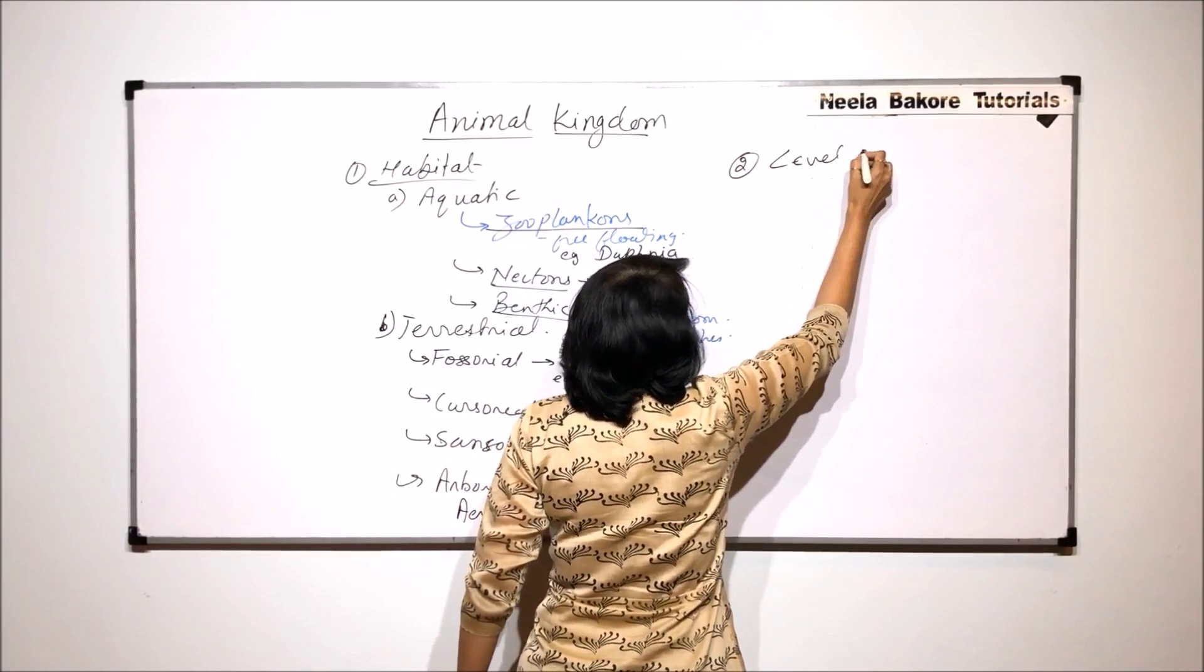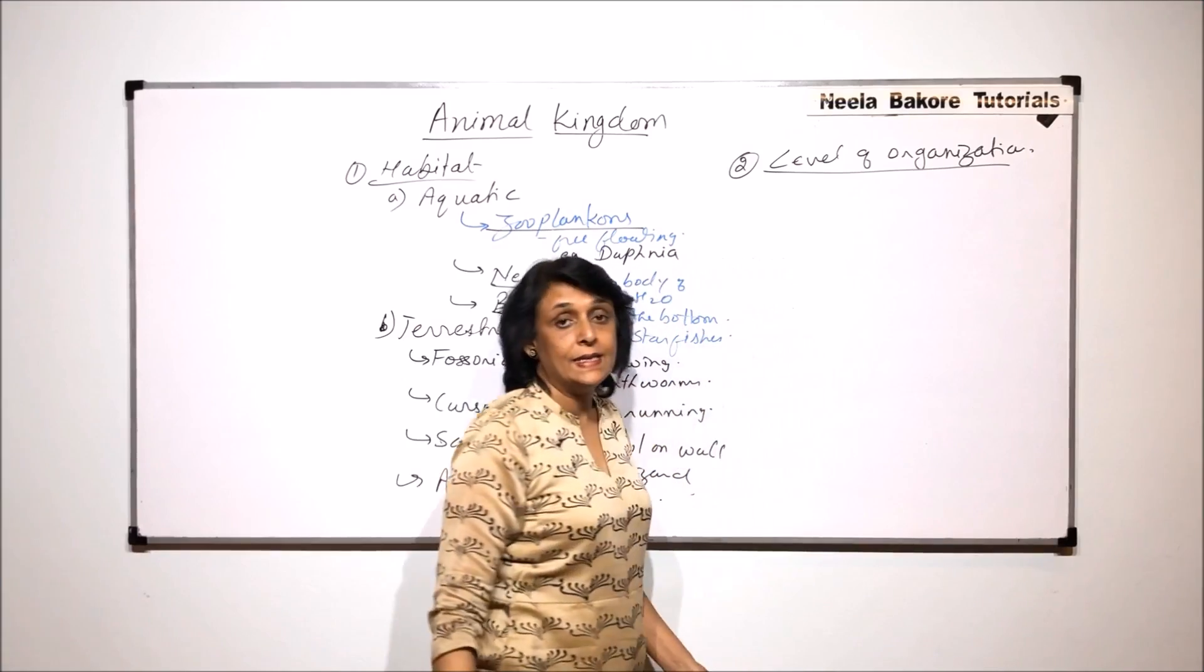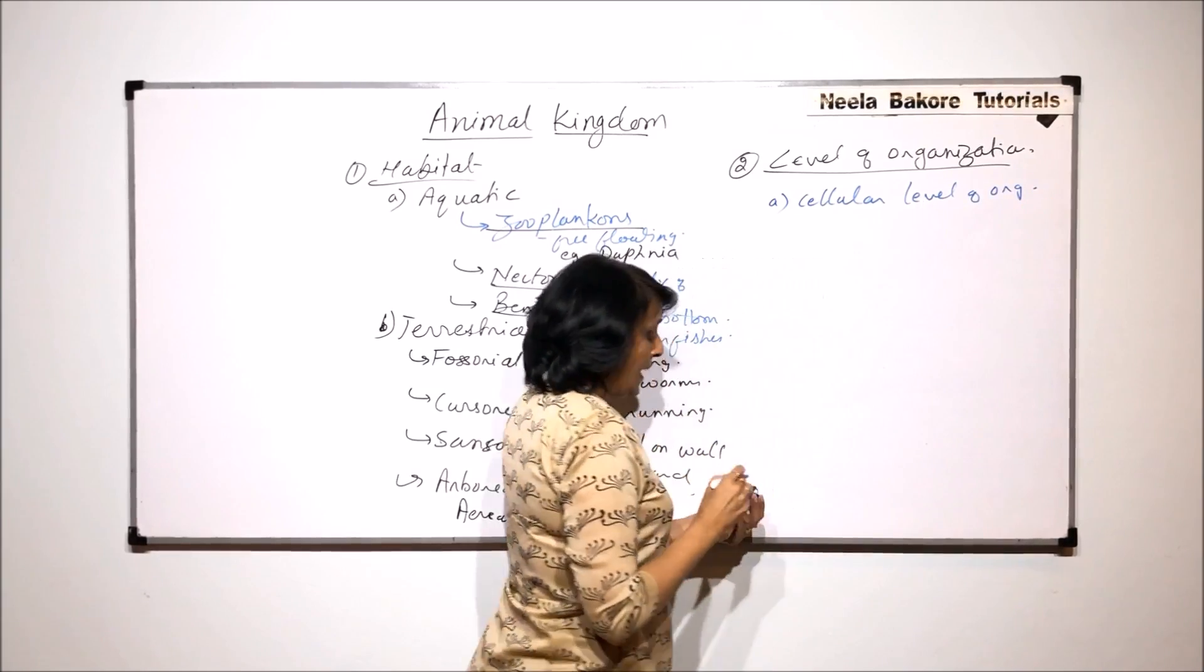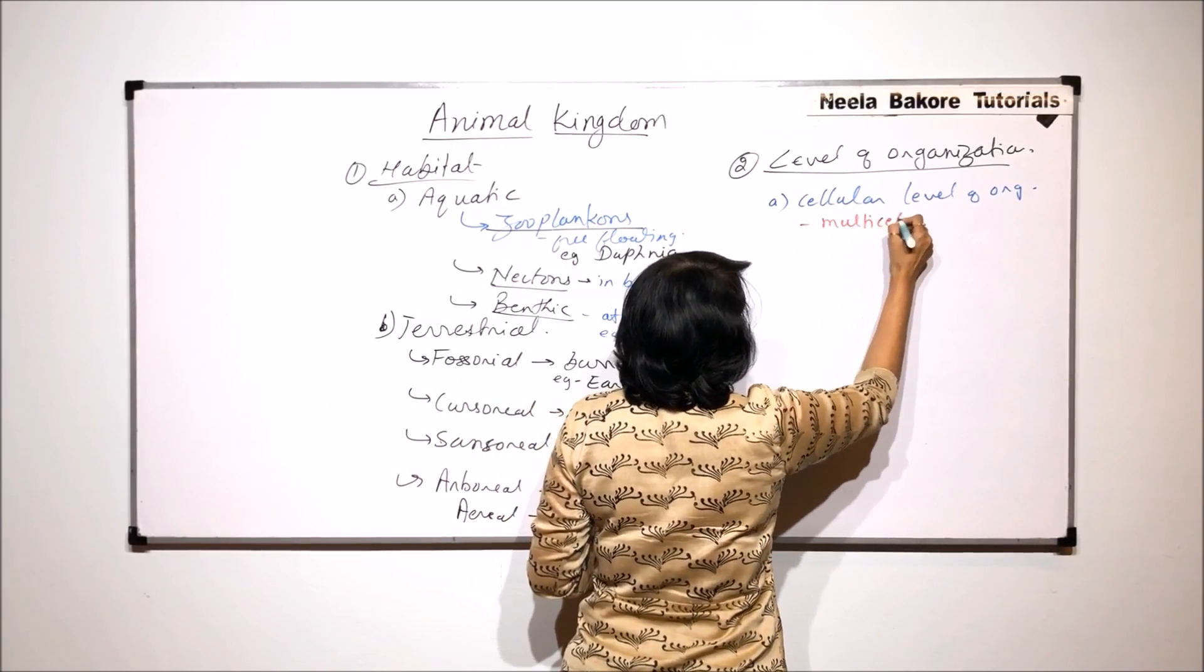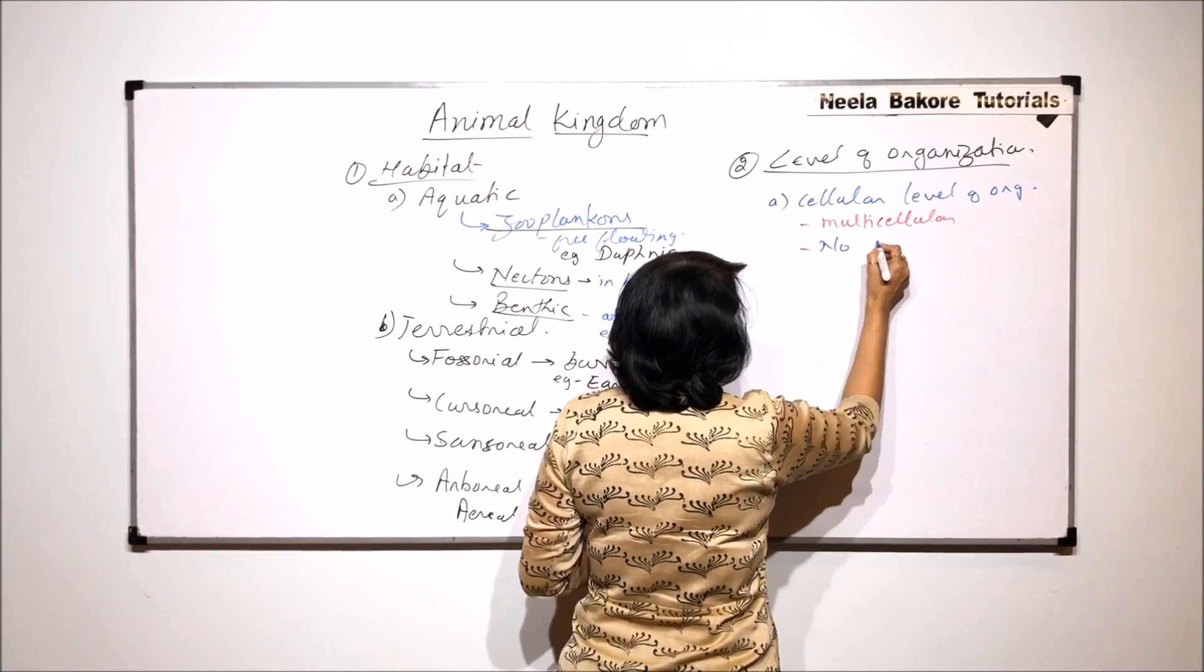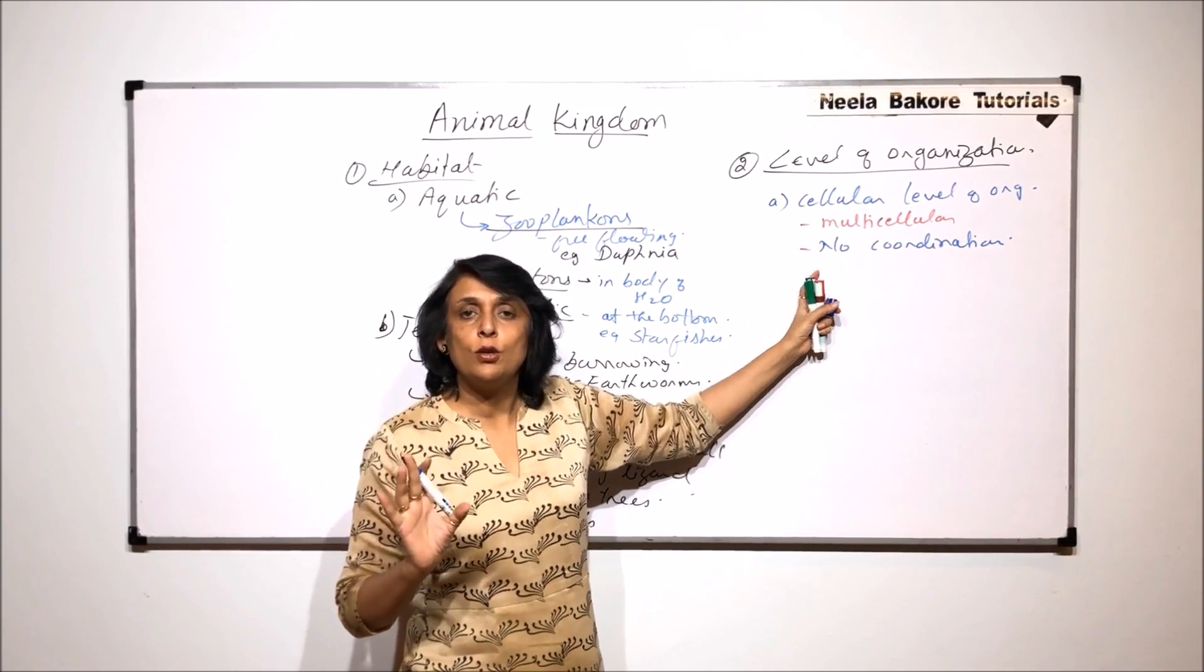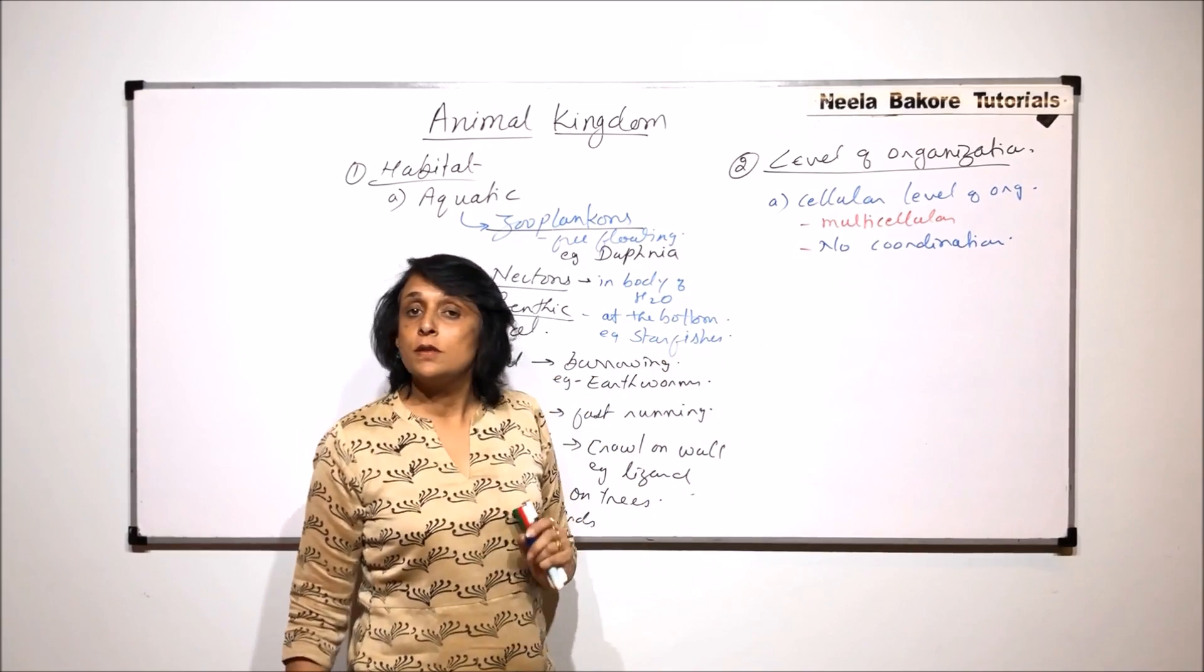And that is the levels of organization. That means how is the body organized. And here we find three different categories. One is known as the cellular level of organization. In this the animal is multicellular, so they have many cells, but there is no coordination between the cells. That means each cell is going to work on its own. Every cell is independently doing its job. But the animal is formed by a collection of cells. And that is what we call the cellular level of organization.